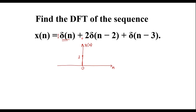At n = 1, the signal is not represented, meaning it is 0. At n = 2, the amplitude of the delta signal is 2, so its value is 2. At n = 3, its magnitude is 1.